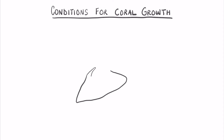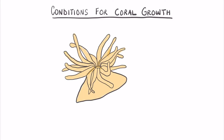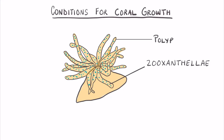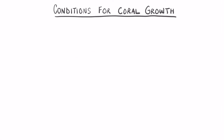In a previous lesson I mentioned that a coral consists of both a polyp, which is an animal, and also its zooxanthellae, which is a plant. While plants and animals do have some common needs, there are also some differences. So let us take a look at the first condition necessary for coral growth.